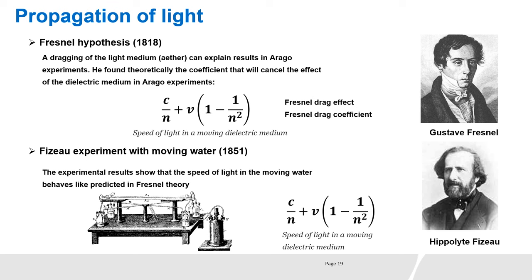Inspired by Young, Fresnel considered a wave theory for light. To explain Arago's experiment with the prism, Fresnel proposed that the light medium, called aether, is dragged when a dielectric medium moves. The drag coefficient, 1 minus 1 over n-square, cancelled the effect Arago wanted to measure.